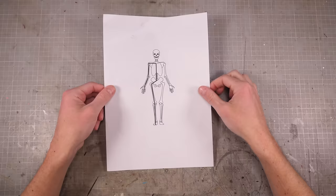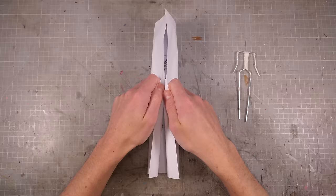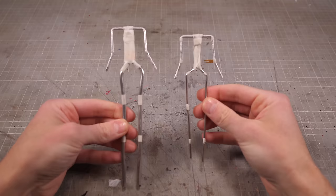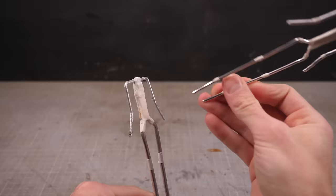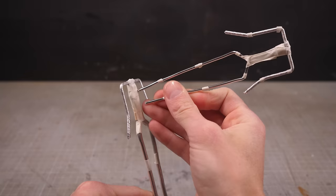This will be my wimpy human with his wimpy human bones, and this will be my horrifying zombie with big old thick thighs. I need my zombie to be rocking extra big bones because he's going to be the balancing point for both models.